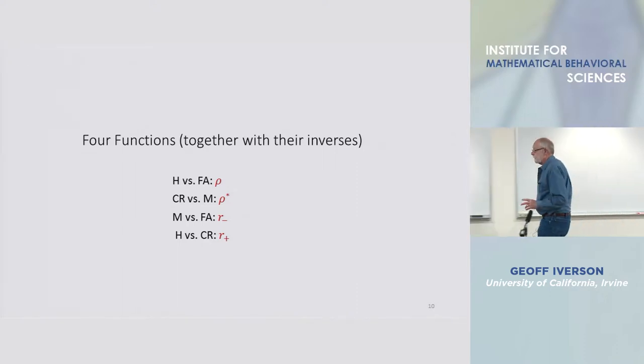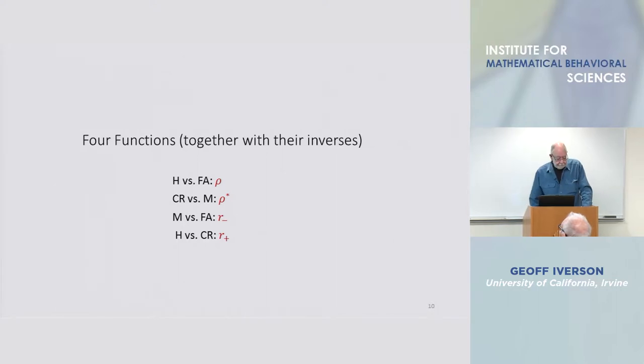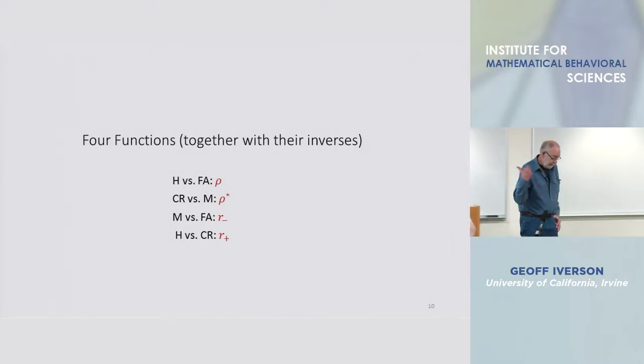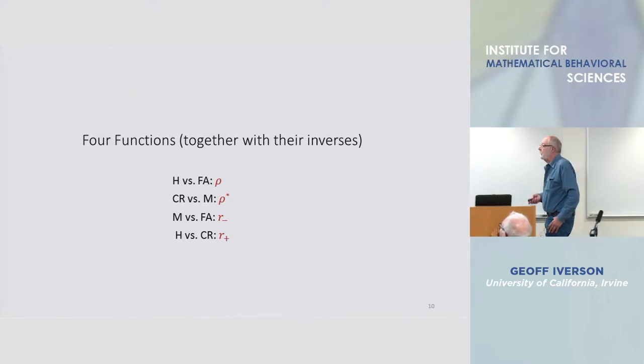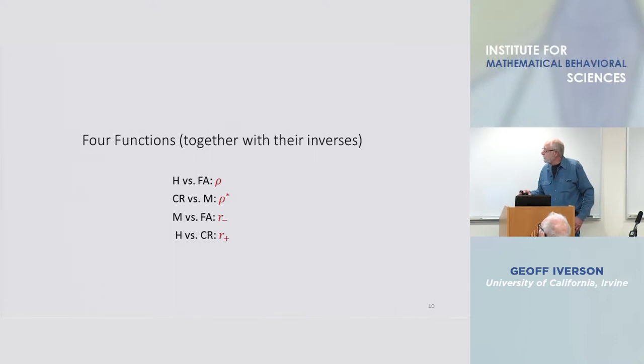Well in fact there are four functions that you can plot. Two of them deserve equal credit as being ROCs and they're labeled here as rho, the usual ROC, and rho asterisk or rho star, which is introduced by me as a very useful object.